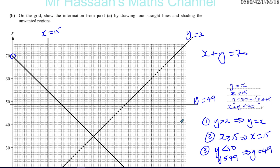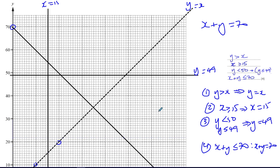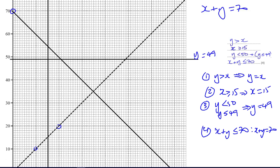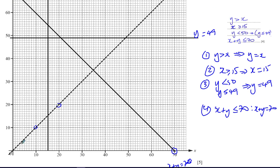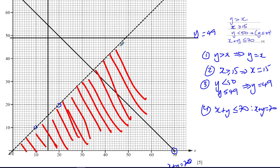Now we have our four lines and we need to do the shading. The question says to shade the unwanted regions. For Y > X: this is the line Y = X, and Y > X is above it, so I need to shade what's below it — everything underneath this line — because we want what's above it and shade the unwanted region below.